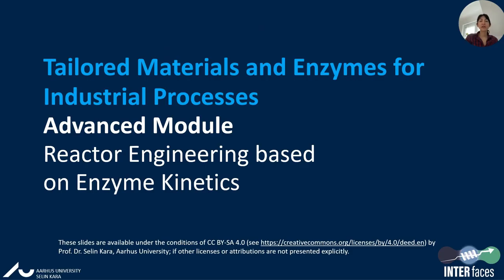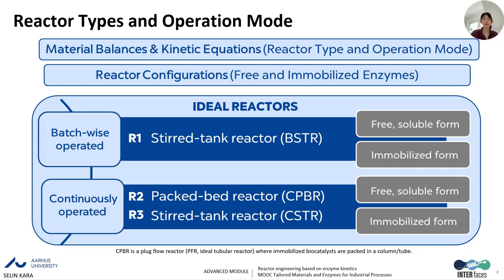Hello everyone. Today we will be learning reactor engineering based on enzyme kinetics. In the basic module, we learned that we have three different ideal reactors: batch-wise operated stirred-tank reactor BSTR, continuously operated packed-bed reactor CPBR, and continuously operated stirred-tank reactor CSTR. We learned about different configurations of these reactors and that we can use free or immobilized enzymes. Today we will move to the part on how to deal with material balances and kinetic equations for the ideal reactors.